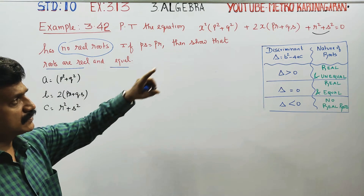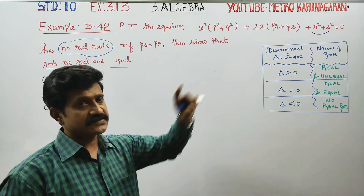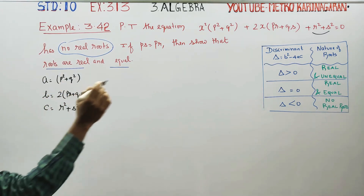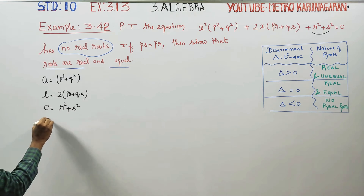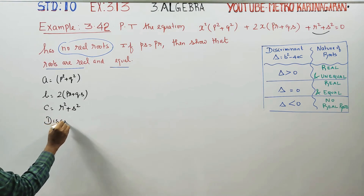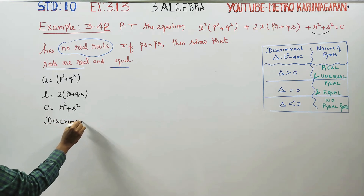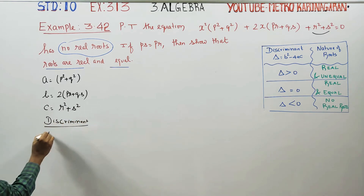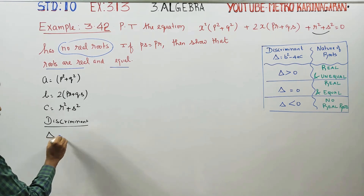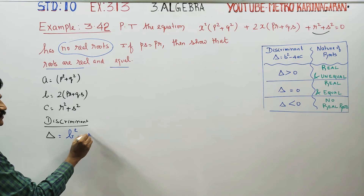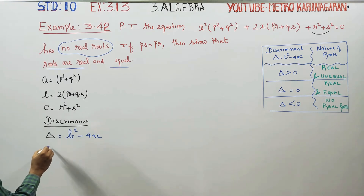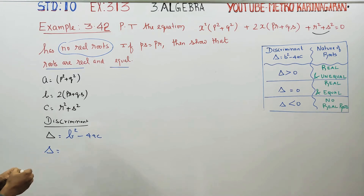With a, b, and c identified, we can find the discriminant. Discriminant is delta. Delta is equal to the formula b² minus 4ac.